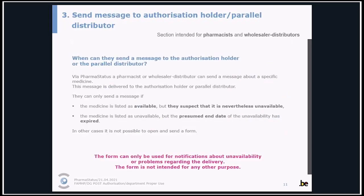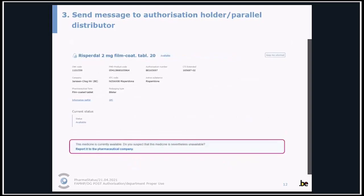In this release, we offer the possibility for pharmacists and wholesaler distributors to send a message to the authorization holder or parallel distributor. They can only send a message if the medicine is listed as available but they suspect it is nevertheless unavailable, or if the medicine is listed as unavailable but the presumed end date of the unavailability has expired. In other cases it is not possible to open and send the form. Very importantly, the form can only be used for notifications about unavailabilities or problems regarding delivery; it is not intended for any other purpose. Here you see an example: a medicine is indicated as available but they have problems ordering it, so they can click the link 'report to the pharmaceutical company.'